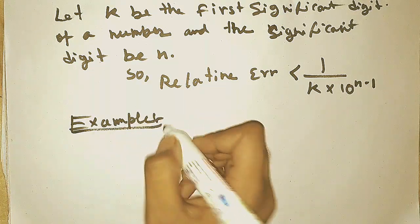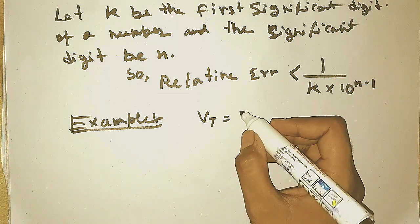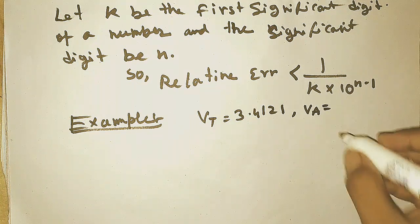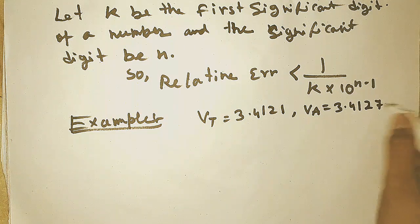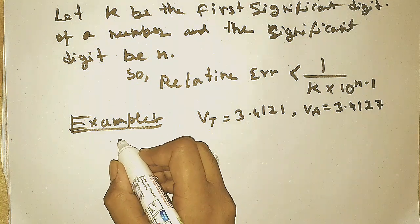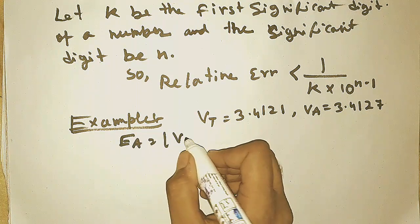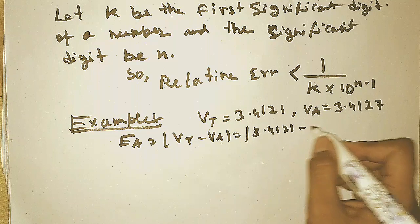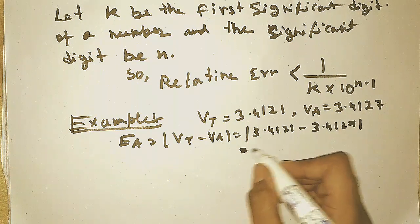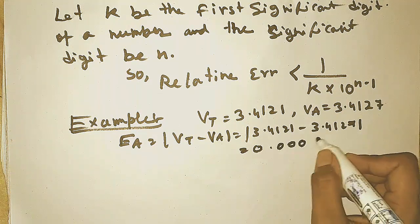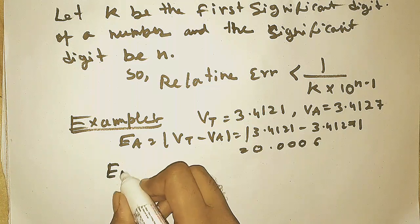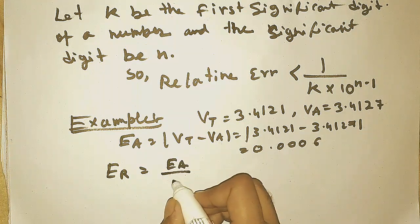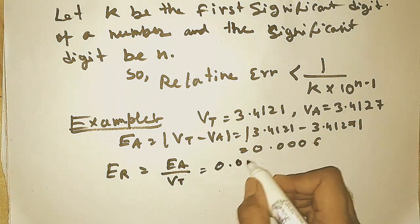This theorem is very important for finding significant digits. Let the exact number be 3.4127 and the approximated number be given. To find the relative error, we first need to find the absolute error. The absolute error is the difference between the exact number and the approximate number, which gives 0.0006. The relative error is then this absolute error divided by the exact number.